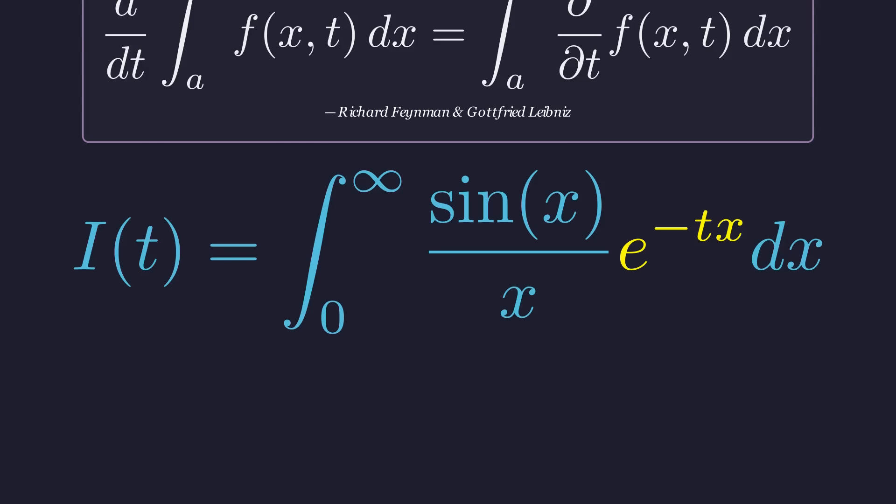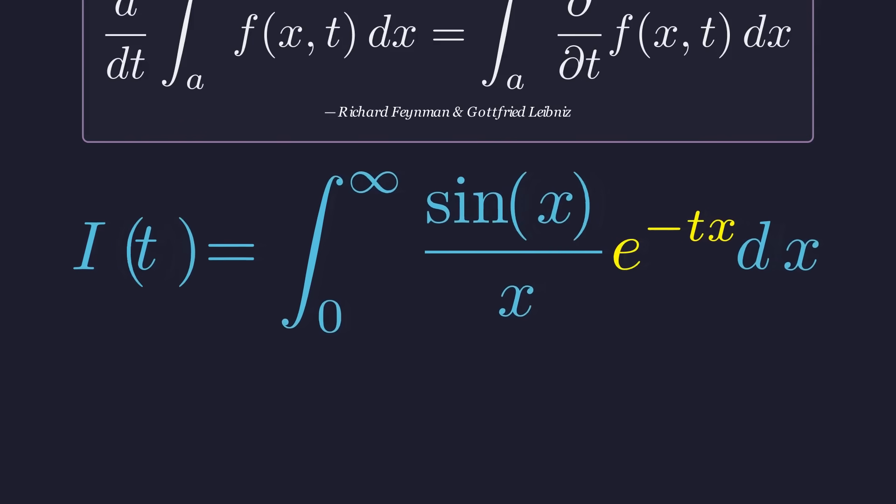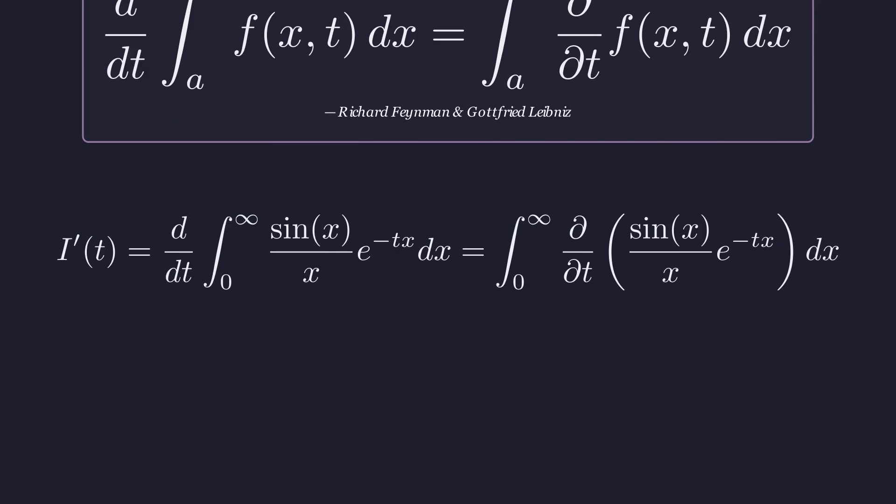Why this specific term? Because when we differentiate with respect to t, it will bring down a factor of negative x, which will cancel the problematic x in the denominator. So, let's differentiate I of t with respect to t. We can move the derivative inside the integral, turning it into a partial derivative.